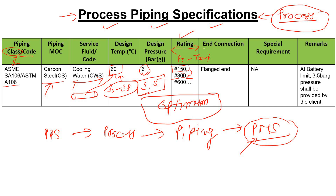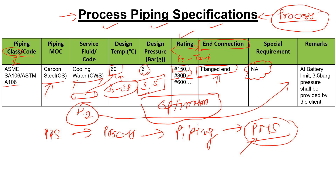In the process piping specification, we also provide information about the end connection. Mainly you will see the end connection type is flanged. In some cases there could be another end connection, but flanged is the most common. If there is any special requirement for a line — for example, in a hydrogen gas line — sometimes a special testing requirement is specified, and that can be noted here as well.